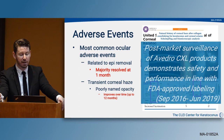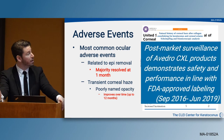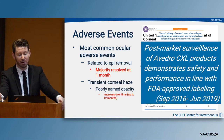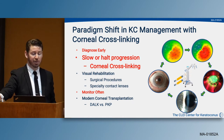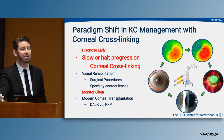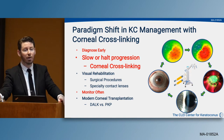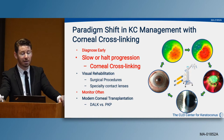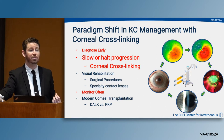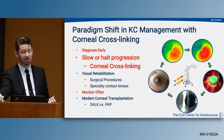Post-market surveys show the Avedro CXL system has demonstrated safety and performance in line with FDA-approved labeling. This has really changed how we manage keratoconus, putting emphasis on diagnosing the disease as early as possible, slowing and halting it with corneal collagen cross-linking, then doing visual rehabilitation by surgical or contact lens means—and in many cases a combination of the two—and monitoring the disease very often.